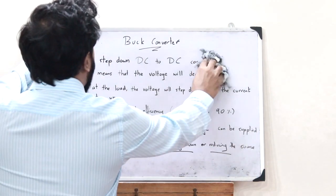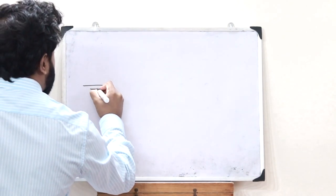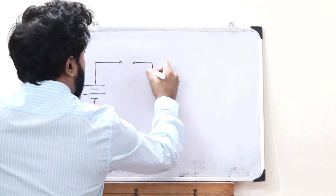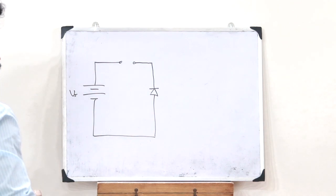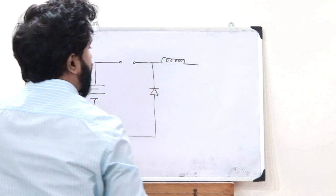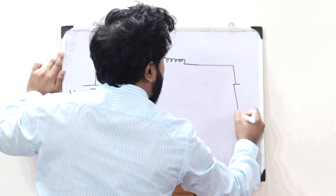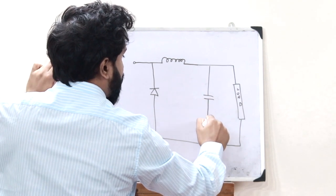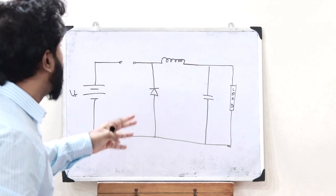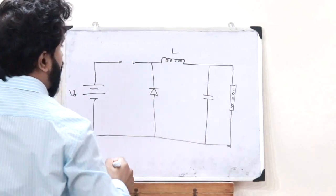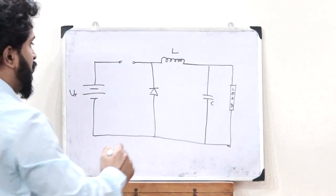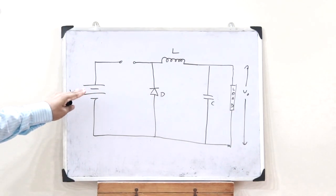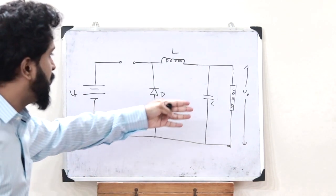Now let us draw the circuit diagram of a buck converter. First, it has a source voltage Vs, which is connected to a switch, and a diode is connected in parallel. This is then connected to an inductor, which is then connected to a load, and across this load a capacitor is connected. The output voltage is obtained across this load, and so the source voltage Vs must be stepped down and supplied to this load.